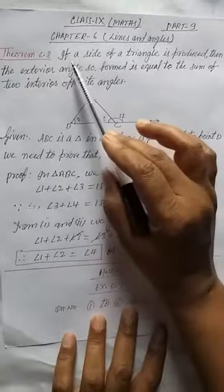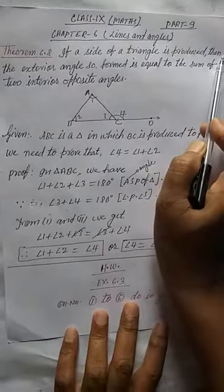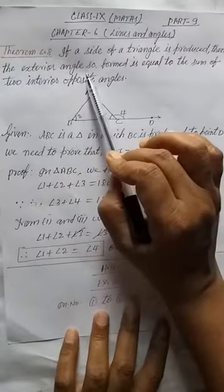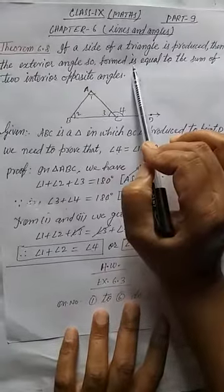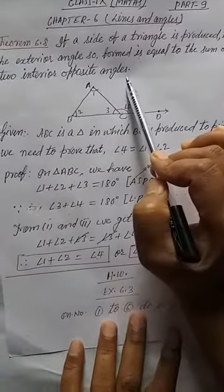Now, let's see the statement. If a side of a triangle is produced, then the exterior angle so formed is equal to the sum of the two interior opposite angles.